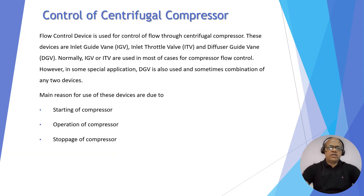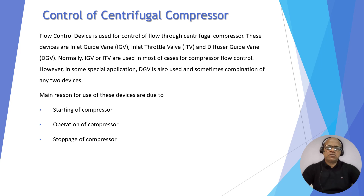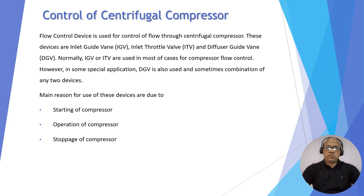First of all, let's understand why devices are used for the control of the centrifugal compressor. The flow control devices used for control of the compressor operations are inlet guide vane (IGV), inlet throttle valve (ITV), and diffuser guide vane (DGV). Normally IGV and ITV are used for most cases of compressor control. However, in some special cases DGV is also used, or sometimes a combination of any two devices.